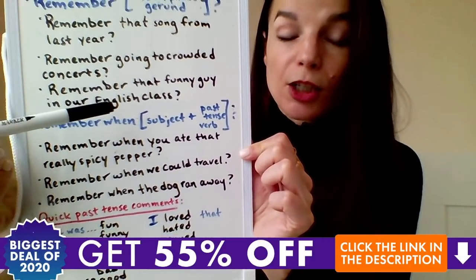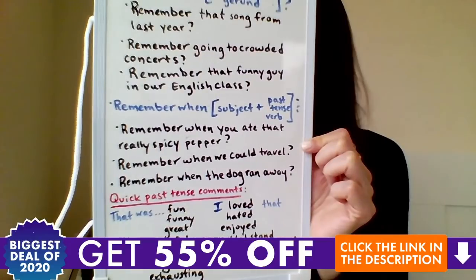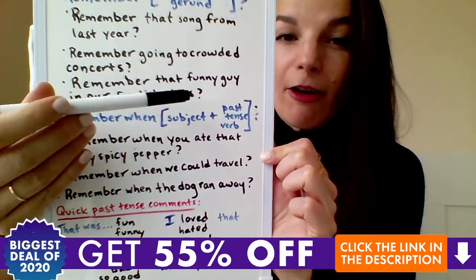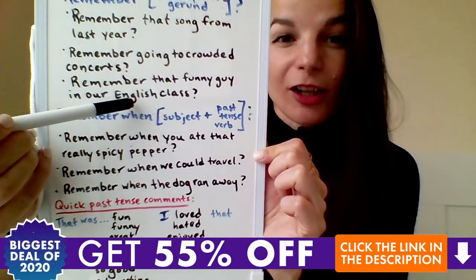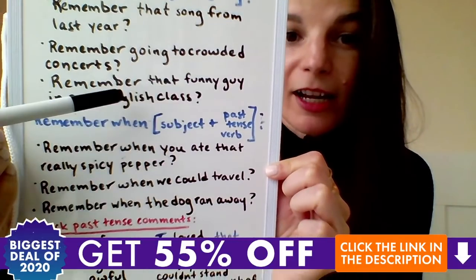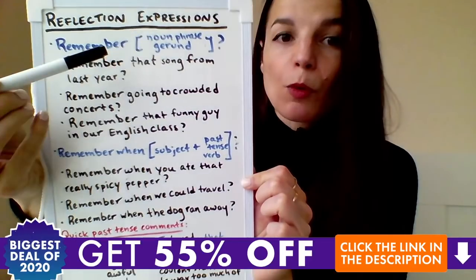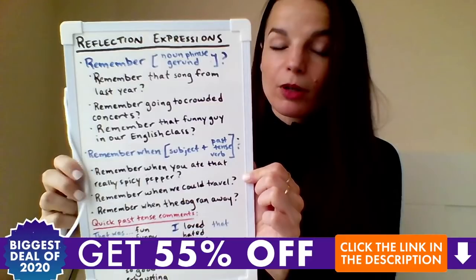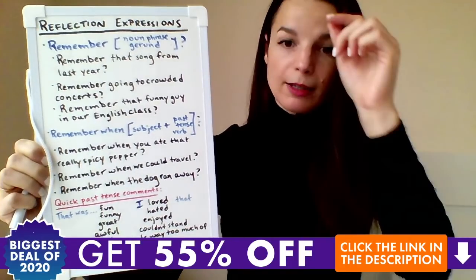For example: 'Remember that song from last year?' — 'that song from last year' is a noun phrase. Or: 'Remember going to crowded concerts?' — 'going' here is a gerund. We cannot use the infinitive form: we can't say 'remember to go to crowded concerts' — that doesn't work. You can also use this pattern to talk about people: 'Remember that funny guy in our English class?' — 'that funny guy in our English class' is the noun phrase. Instead of just 'remember,' you can say 'Do you remember something?'